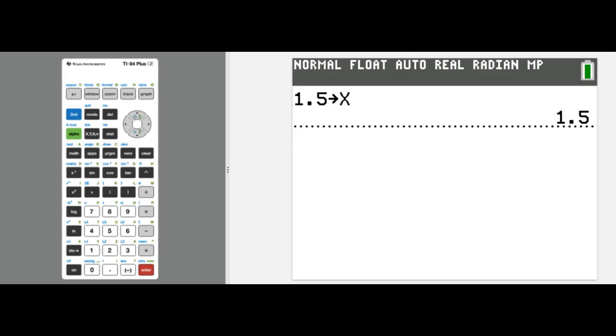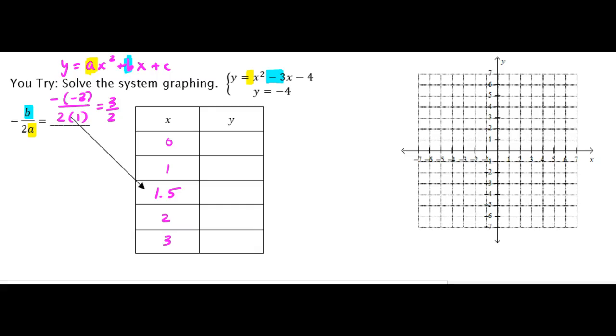And now I'm just going to type in the problem. So I'm going to type in x squared minus 3x minus 4, and when I press enter, it gives me my y value. So negative 6.25. So I'm going to go back here and I'm going to fill in negative 6.25.